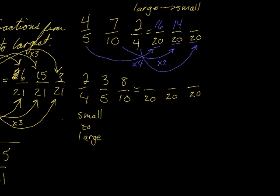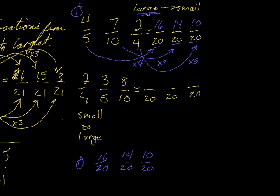What did I do to 4 to get 20? I multiplied it by 5 — so that's going to be 10. Now, since we're ordering large to small: the largest is 16/20, the second is 14/20, and the third is 10/20. That's what I got for the first question.